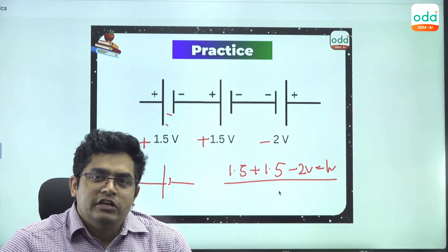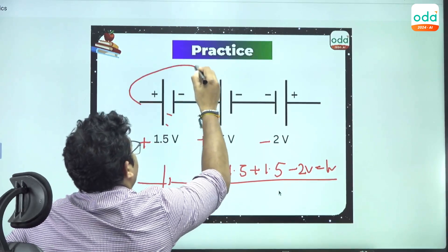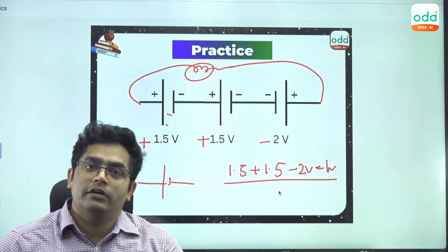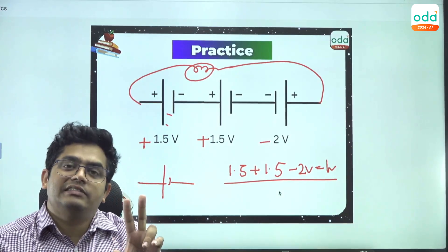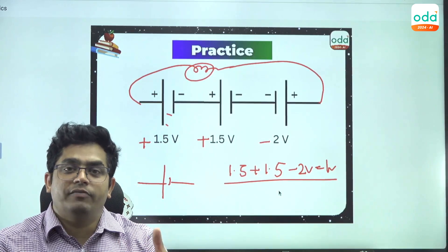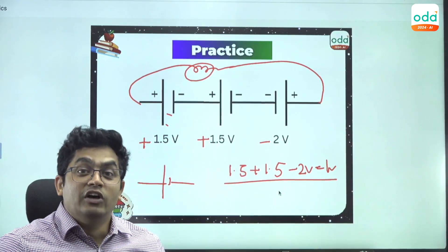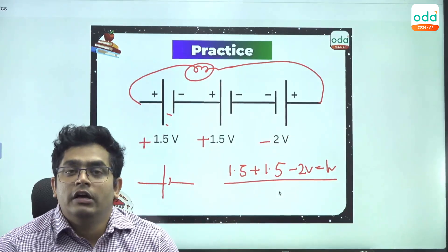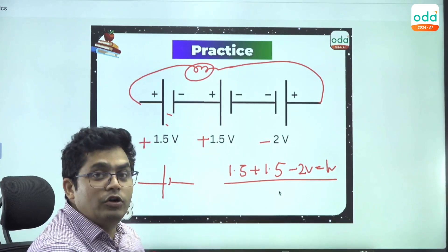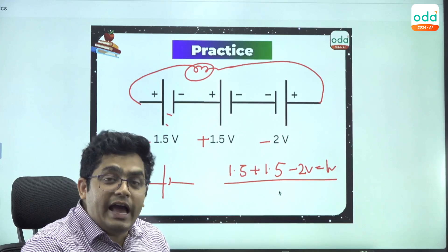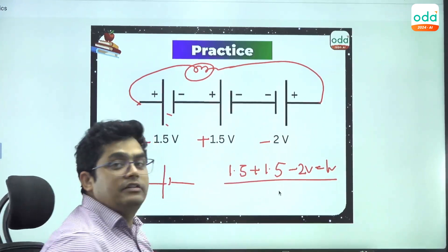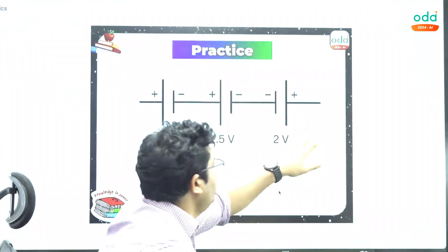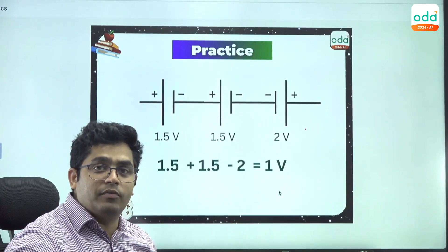Now, if I connect a bulb here, will it glow? Many students think that if even one cell is connected in the incorrect way — positive to positive or negative to negative — the entire thing will not work, so the bulb won't glow. But that is not the case. As long as we have some voltage across the terminals, the bulb will glow. I will prove everything with live components.